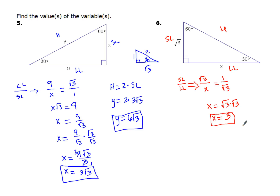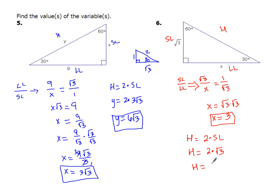If you wanted to find the hypotenuse — which we're not given, but we'll go ahead and do that anyway because we've got mad math skills — the hypotenuse is twice as long as the short leg. My short leg has a value of square root of 3, so I just double square root of 3. That's going to be 2 square roots of 3, and I'd be done with that.